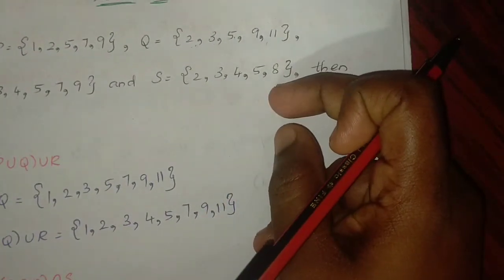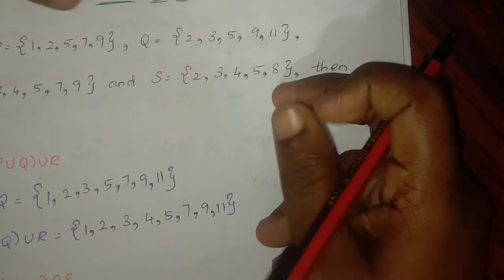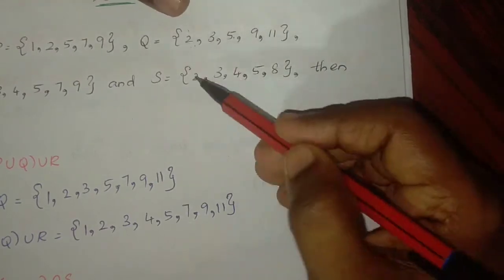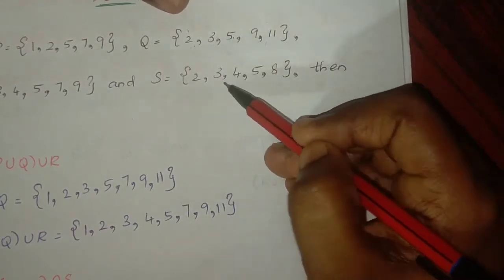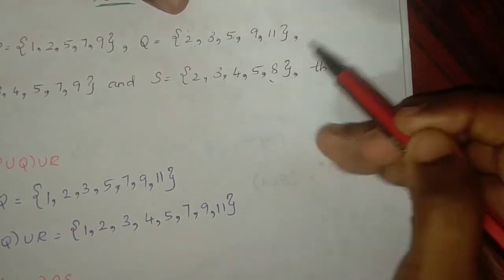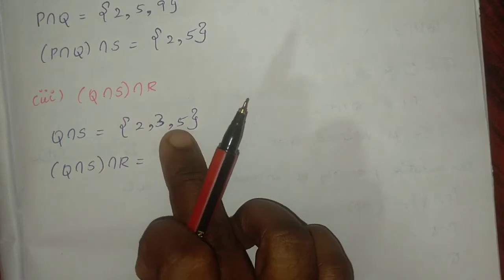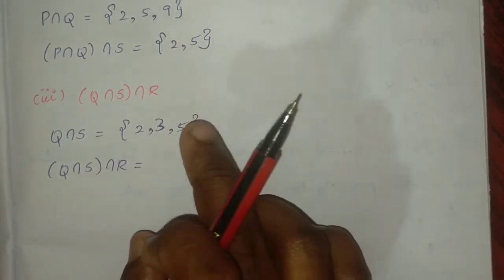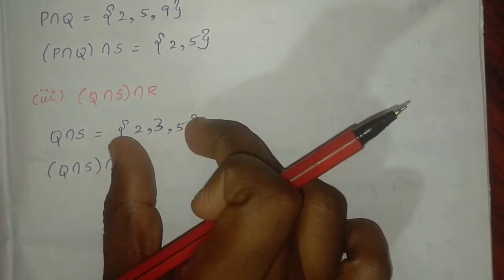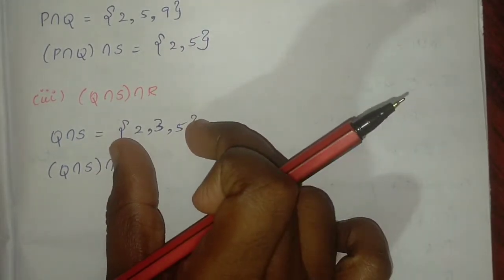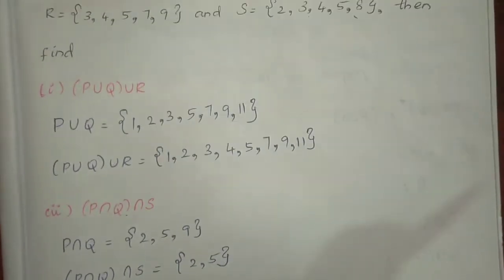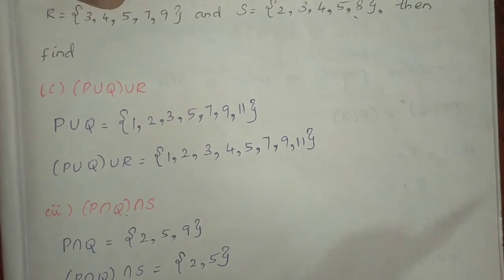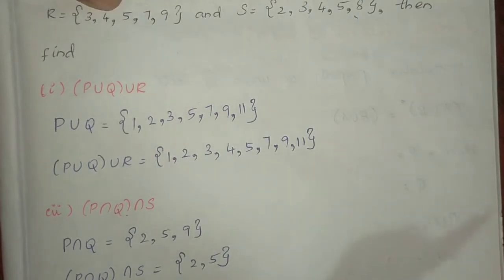Now intersecting with S: common elements are 2, 3, 5. This gives the intersection result. Comparing with R, the common elements are 3 and 5.